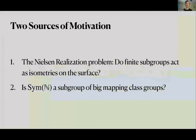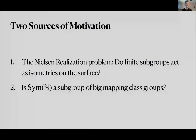There were two sources of motivation when my collaborators and I started thinking about the topological structure on big mapping class groups. The first was the Nielsen realization problem, which is a theorem for finite type surfaces: if you have a finite subgroup of your mapping class group, can you lift it into the isometry group of some complete hyperbolic metric on the surface? Kerkhoff proved this is true for finite type surfaces, and we really wanted it to be true for infinite type surfaces — meaning finite order elements look like rigid rotations with no strange twisty torsion.